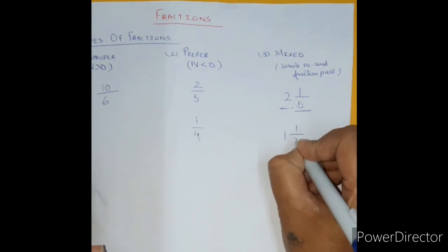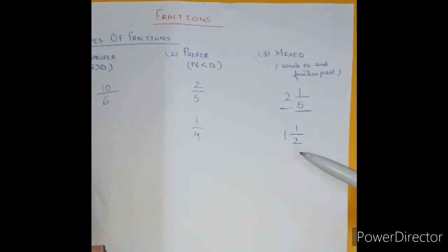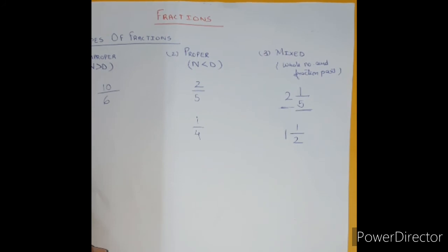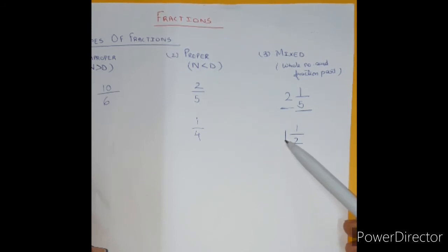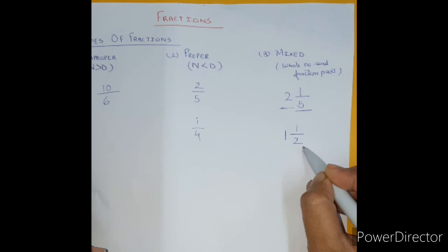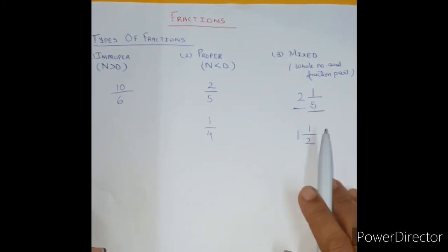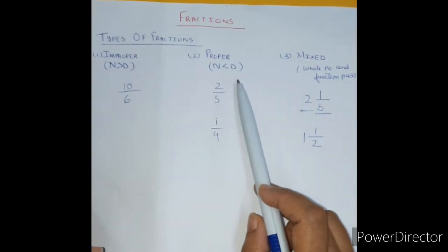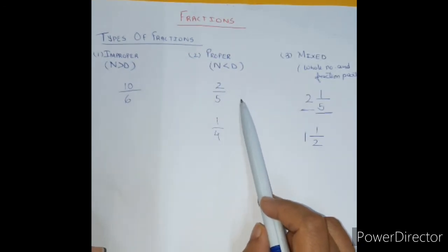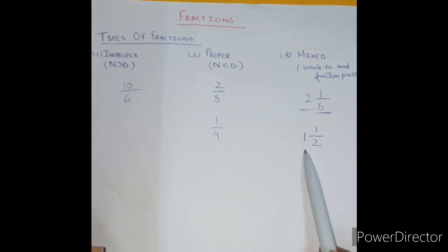For example, if Tom ate one and a half chapati for breakfast, this is a mixed fraction — one whole chapati and a half chapati, written as 1 and a half. To revise: an improper fraction has the numerator greater than the denominator; a proper fraction has the numerator less than the denominator; and a mixed fraction has a whole number part and a fraction part.